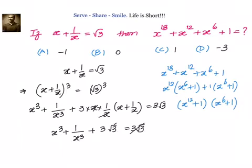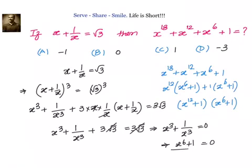3 root 3 and 3 root 3 cancel. So I will have x cube plus 1 by x cube equal to 0, or x power 6 plus 1 by x cube equal to 0, or x power 6 plus 1 equal to 0. Zero into anything is equal to 0, so our answer is option b.